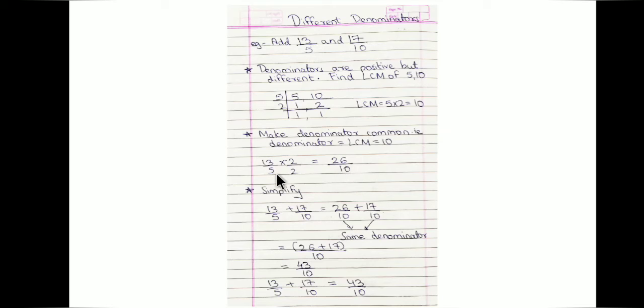So 13/5 can be written as 26/10. Now we add 13/5 plus 17/10, which equals 26/10 plus 17/10. The denominators are now common, so we add only the numerators: 26 plus 17 over 10, which equals 43/10.